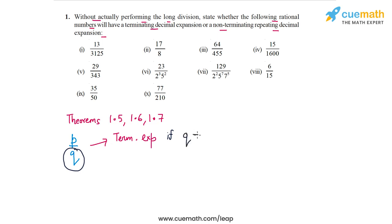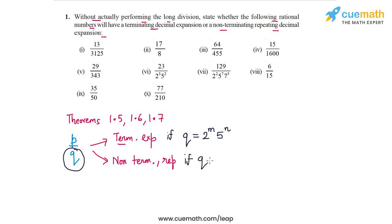In other words, if Q can be written in the form 2^m × 5^n and has no other prime factors, then P/Q will have a terminating expansion. P/Q will have a non-terminating repeating expansion if Q is not of this form — meaning when Q is prime factorized, it has prime factors other than two and five.